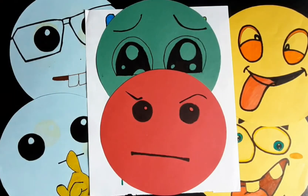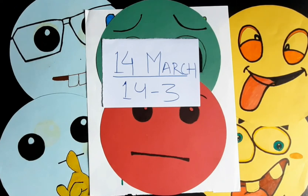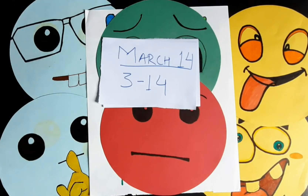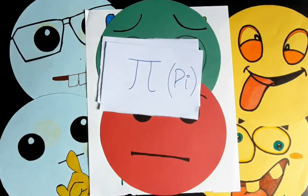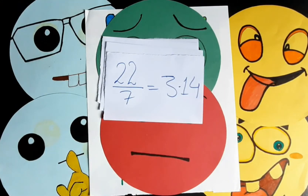Hello everyone, welcome to our math class. Today is a special day for all math lovers because today is 14th March. In our country we usually write the date as 14/3 — date first, month second. But in many western countries like the USA, they write month first, so it becomes 3/14, and 3.14 is the most commonly used value of Pi, which equals 22/7.